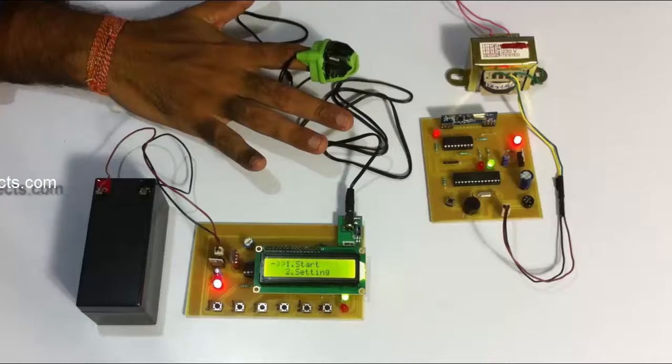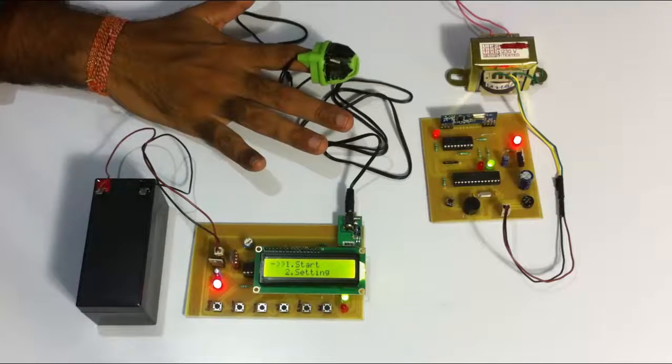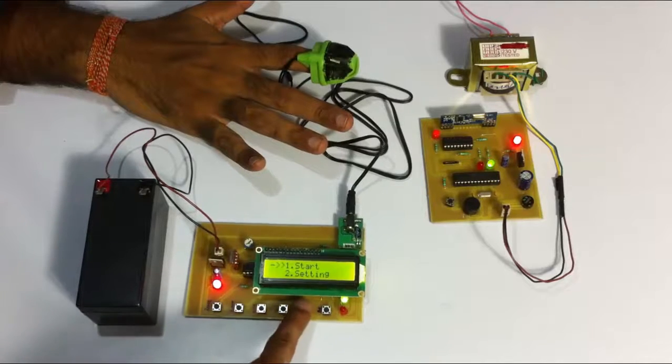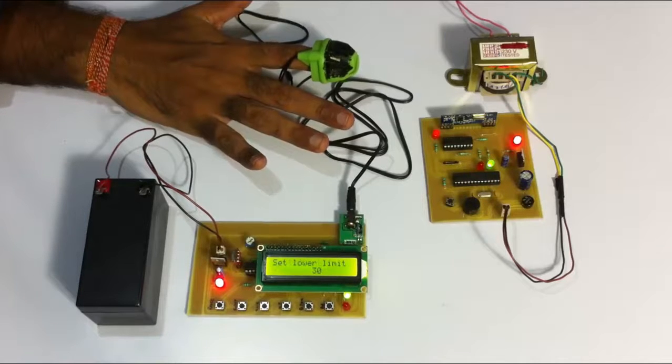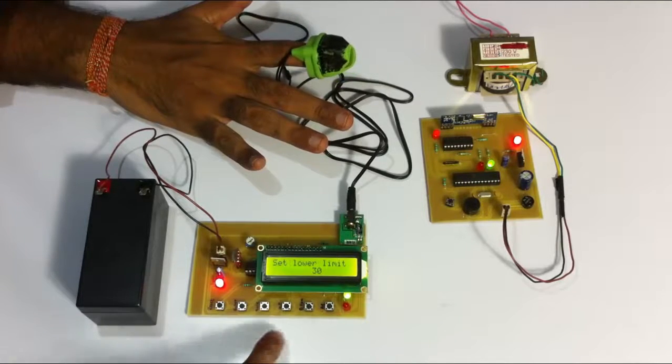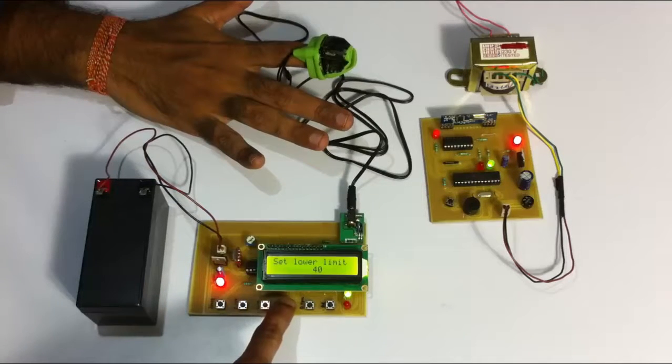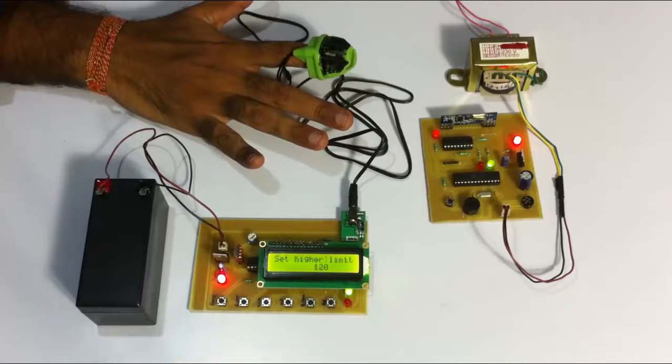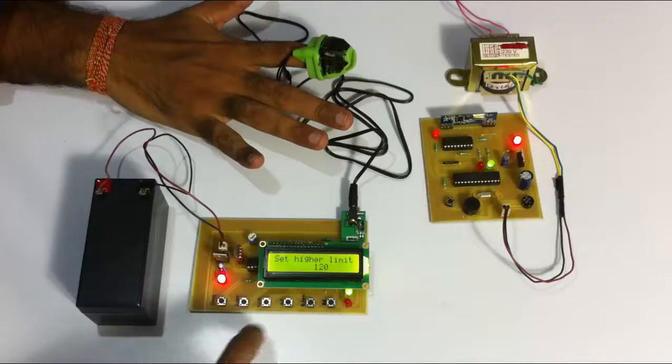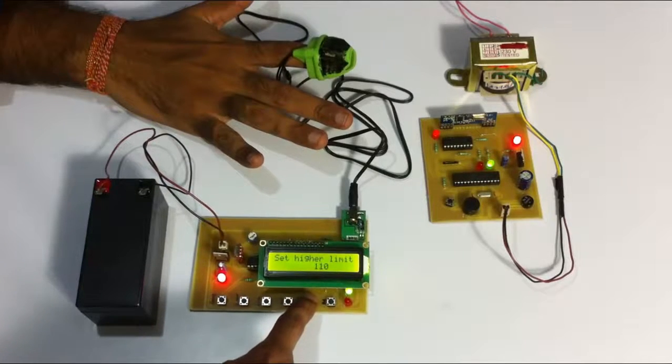Also we can set upper and lower limits for heart rate ourselves by going to setting mode. You can see you can increase or decrease the lower limit here. Now let's set it to 60 and click enter. Similarly we can increase or decrease the high limit.